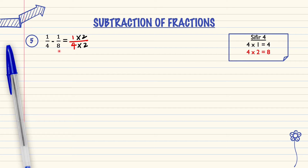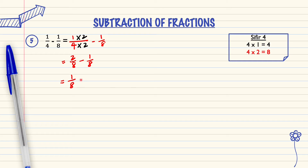1 over 8, we rewrite it. 1 times 2 equals 2; 4 times 2 equals 8. 1 over 8, we rewrite it. Now the denominator is the same. So we can subtract the numerator: 2 minus 1 equals 1 over 8. So this is the answer.